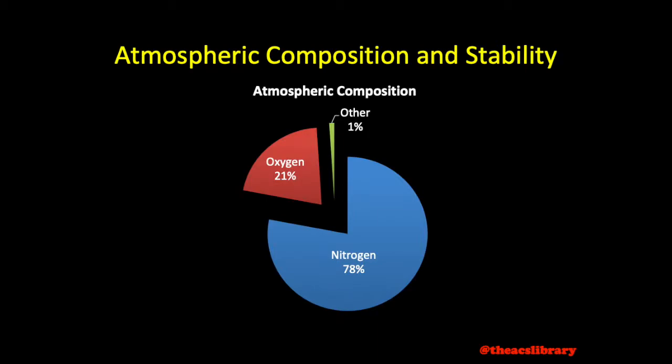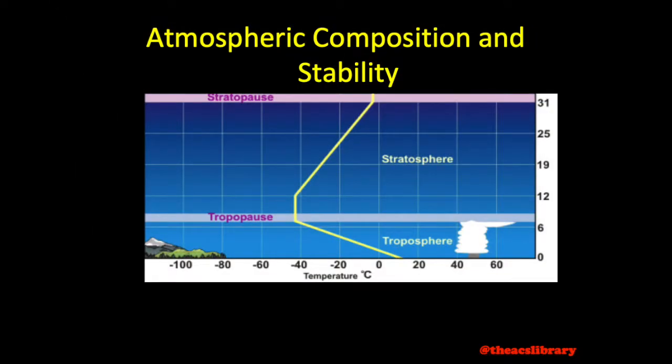Next, we will cover the layers of the atmosphere using this graphic shown. The numbers along the bottom depict the temperature in degrees Celsius. To the right, we have our altitude in miles above the Earth's surface. The yellow line depicts atmospheric temperature at a given altitude.